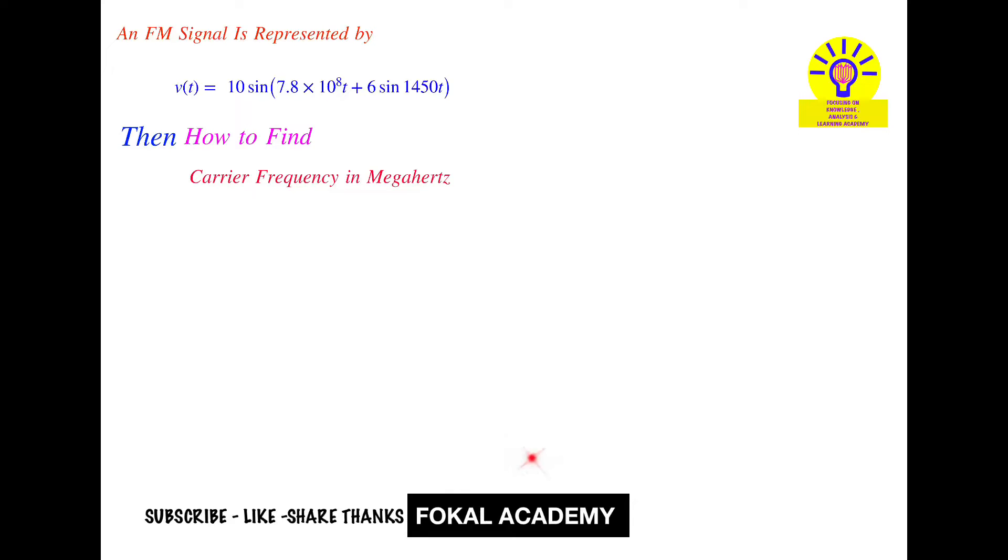Hi dear one, welcome to Focal Academy. See this problem. Here an FM signal is represented by an equation: V(t) = 10 sin(7.8 × 10^8 t + 6 sin 1450t). Then how can you find the carrier frequency in megahertz for the given FM signal?